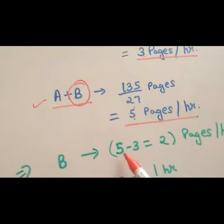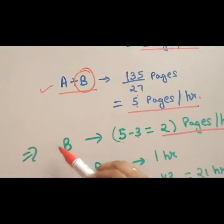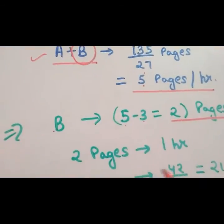5 minus 3. 5 minus 3, that is 2 pages per hour B can write. So by unitary method we can find the answer.